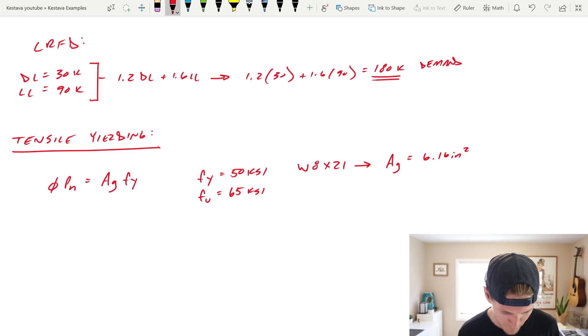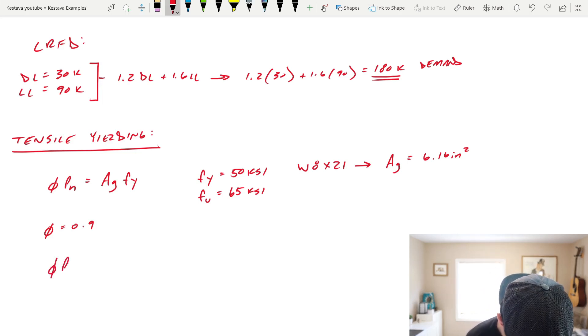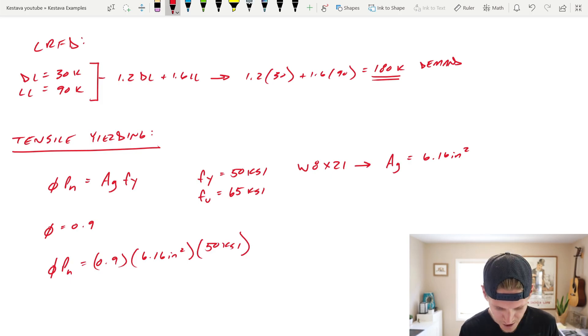We have everything we need to solve our first failure mode, which is tensile yielding. So phi for this case is equal to 0.9. That's specified right in chapter D with that equation. Very straightforward. So phi PN equals 0.9, 6.16 inches squared, and the FY 50 KSI. We have KSI, kips per square inch. We have inches squared. That's going to get us, and phi is just unitless. So that's going to give us a result of kips. That equals 277.2 kips, which is greater than our demand, which is what we need to design for, of 180 kips. So we are okay in this limit state, so we're fine.